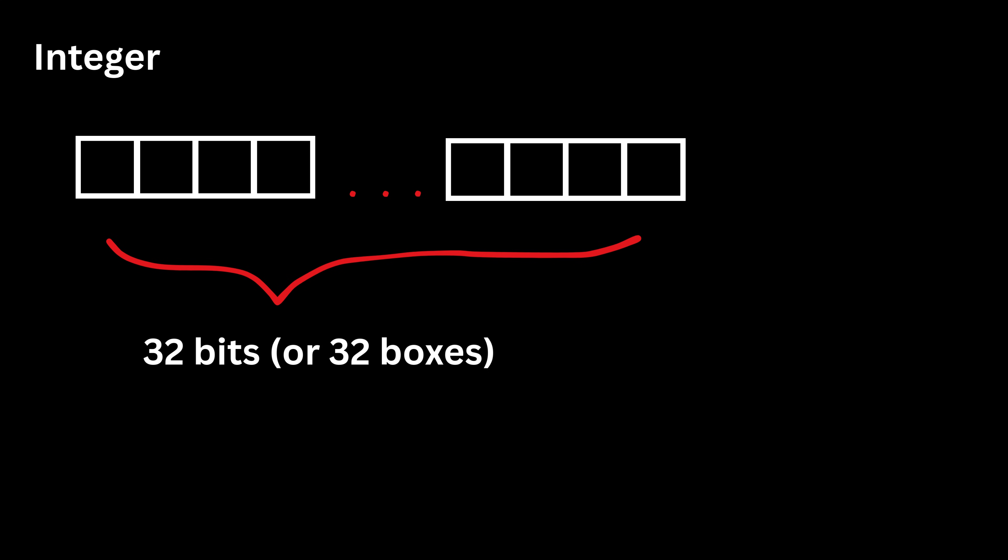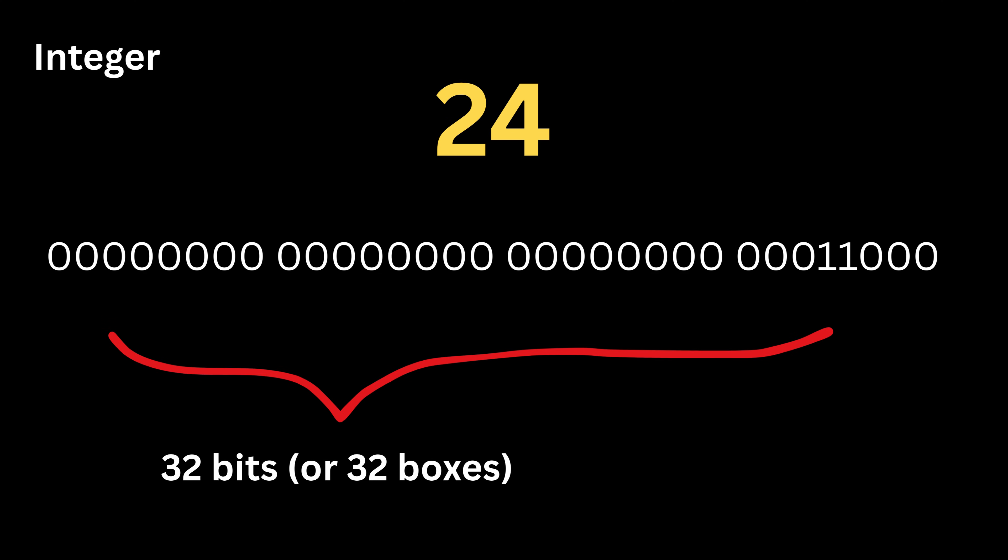This means the computer reserves a block of 32 positions, each holding either zero or one, and together those bits represent the whole number. Because the size is fixed, the computer knows exactly how to read, write, and perform operations efficiently. For example, 24 looks like this in bits, and 18 looks like this.